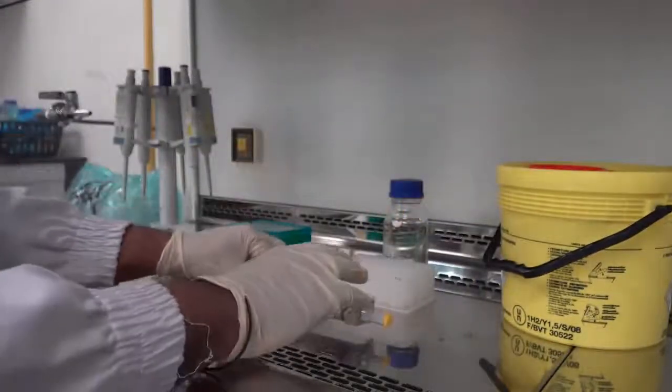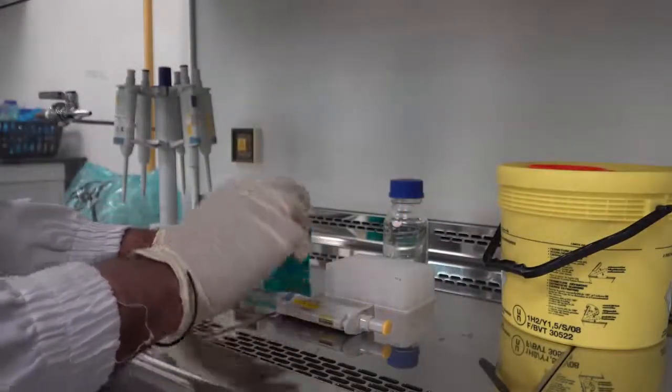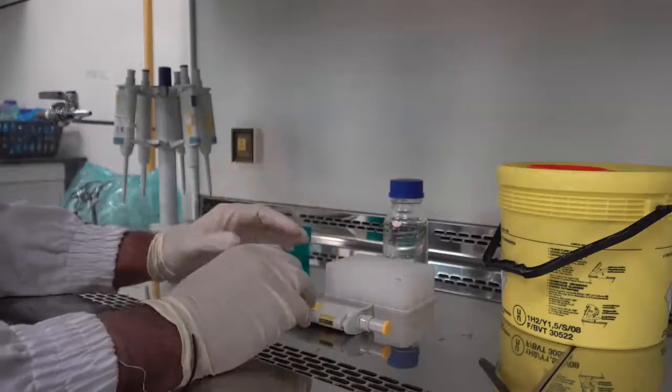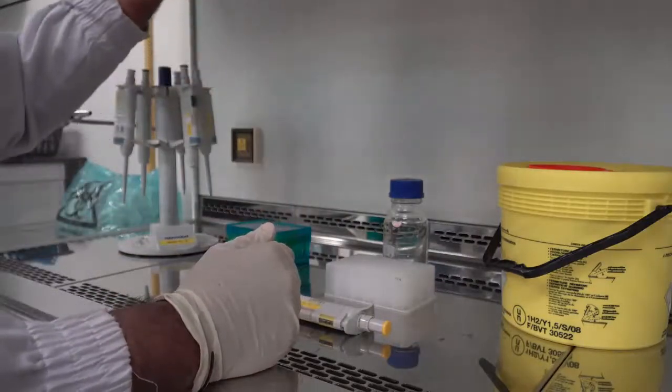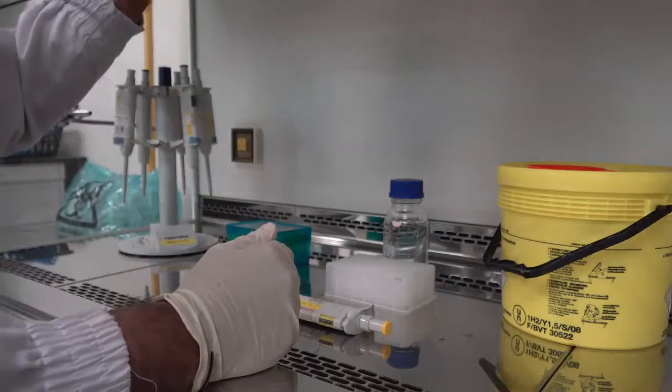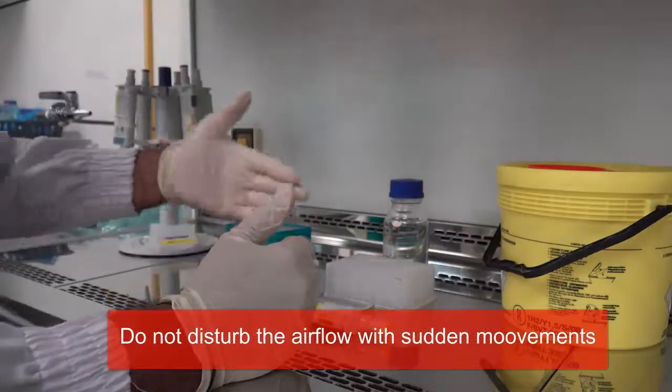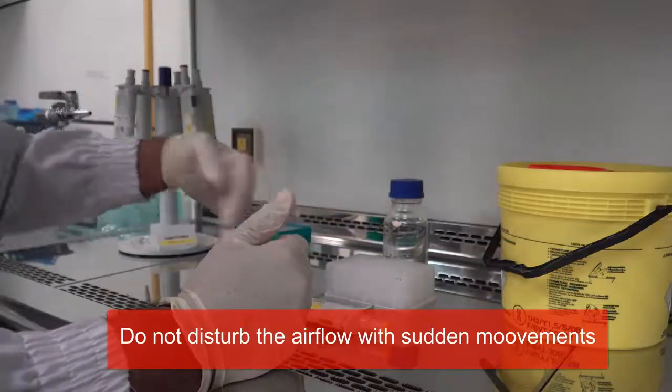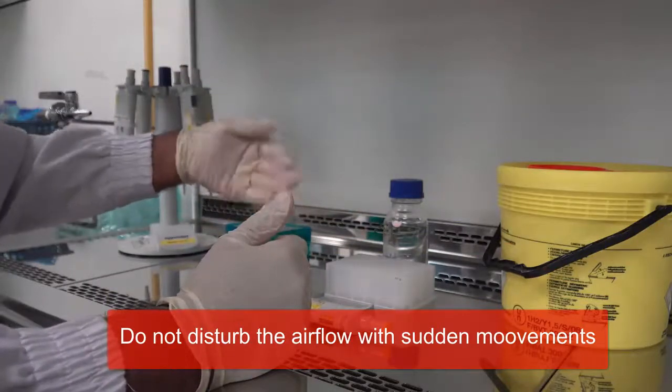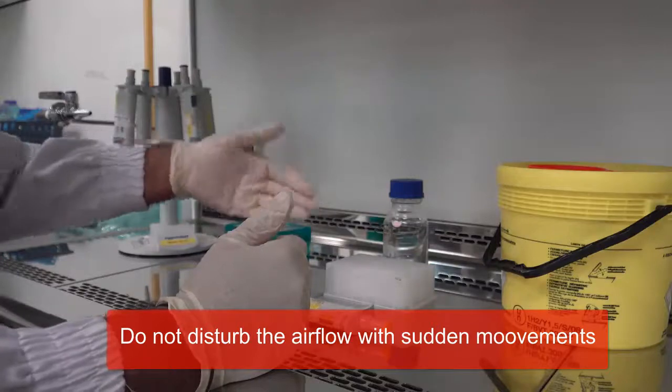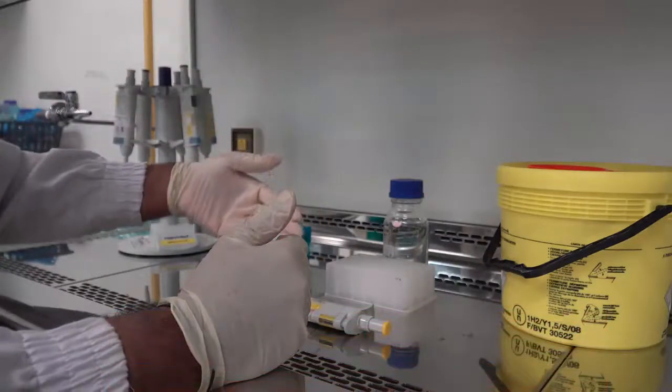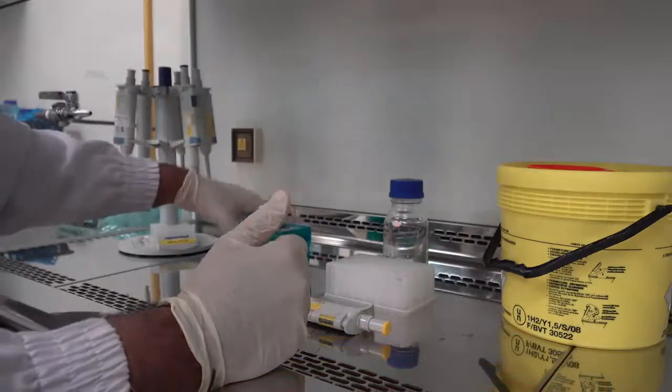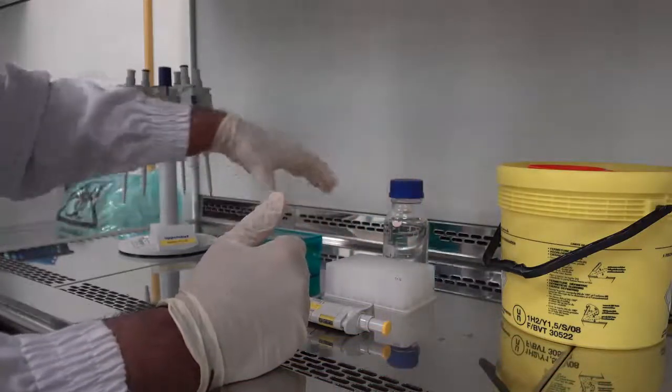There are some tips which one needs to note when working in this biological safety cabinet. This region basically has a downdraft of air which protects me as the operator from this sample as well as protects the sample from any kind of contamination which may be produced in the environment. This is why we work within this zone.